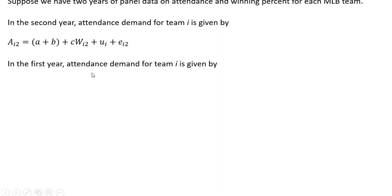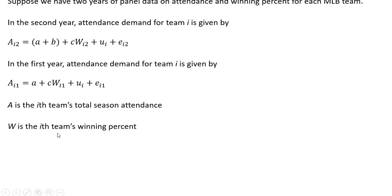In the first year, attendance demand for team i is given by a similar equation, except we're using one here to represent year one, or the first year of data. So i is the ith team's total season attendance. W is team i's winning percent.